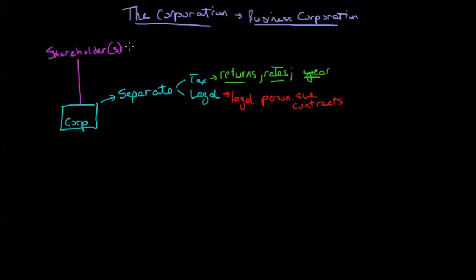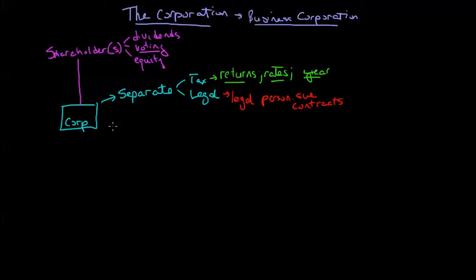Shareholders have three rights: the right to dividends of the corporation — a share of the after-tax profits; voting rights, which is probably the most important right; and the right to the equity of the corporation — they're the ones who would get the remaining assets in the event that everything was liquidated and all debts were paid. These voting rights are important because they allow shareholders to appoint or elect the directors of the corporation.